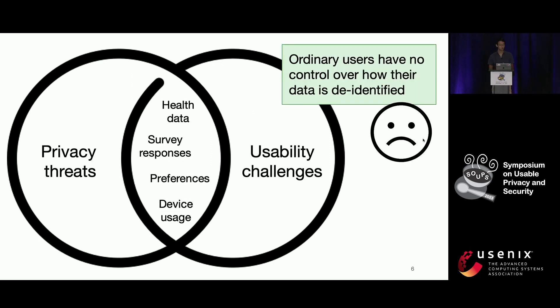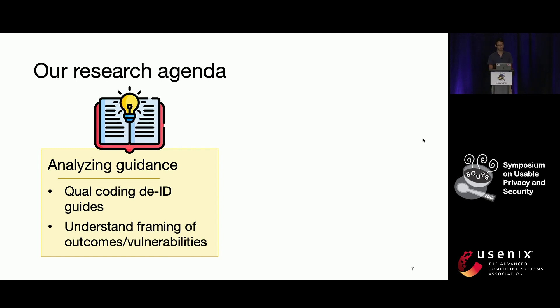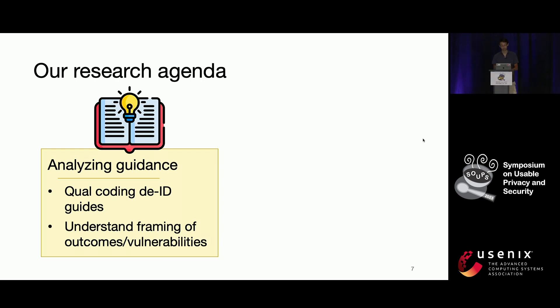We see this as an issue that really lies at the intersection of privacy and usability. Ordinary users and their data have no control over how their data is de-identified, and this is really important. So what we're trying to do is twofold. We're doing qualitative coding on de-identification guides to understand how these guides are framing the outcomes and vulnerabilities of de-identification to practitioners — people who de-identify data.